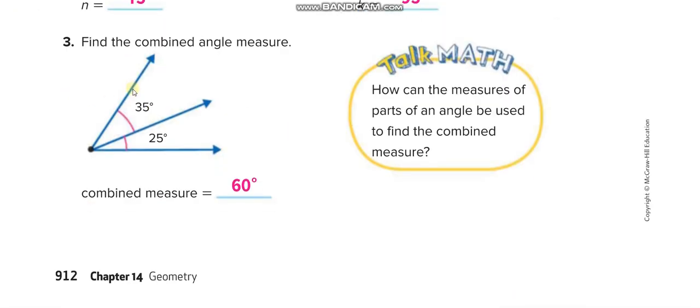Here now you have to add these two angles: 35 plus 25, 60 degrees, because they want you guys to find the combined angles. So to find the combined angle you have to add them.